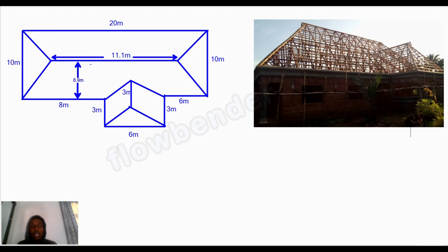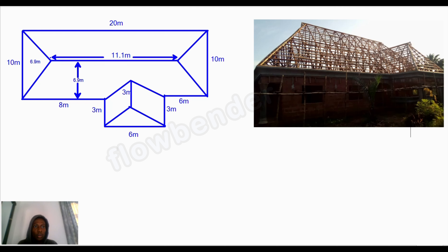The slanting height on the other side is also the same. Most of the time it is, unless the carpenter does not follow proper woodwork. What I'm saying is that you should count your purlin spacing and multiply by 0.36. For the purpose of this video we'll be using the same slanting height, so let's take this side as 6.9 meters too.